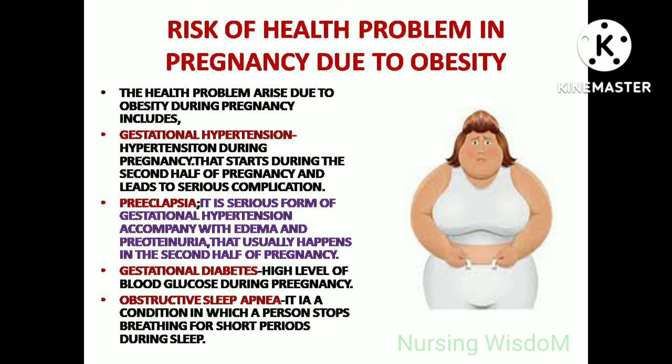Health problems that can arise due to obesity during pregnancy include: gestational hypertension, meaning hypertension that develops during the second half of pregnancy and leads to serious complications. Pre-eclampsia, a serious form of gestational hypertension accompanied with edema and proteinuria, usually happening in the second half of pregnancy. Gestational diabetes, with high levels of blood glucose during pregnancy. And obstructive sleep apnea, a condition in which a person stops breathing for short periods during sleep.